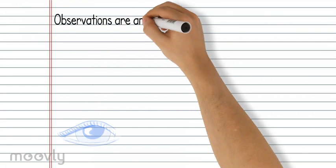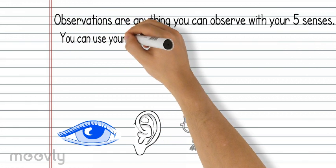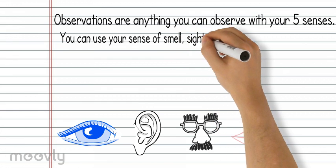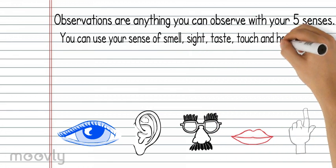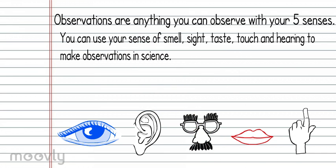Observations include everything that can be observed with your five senses. You can use your sense of smell, sight, taste, touch, and hearing to make your observations in science.